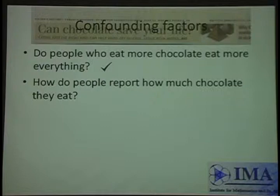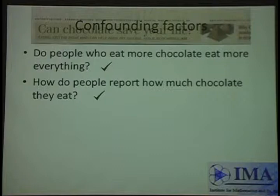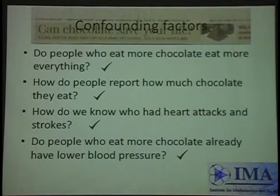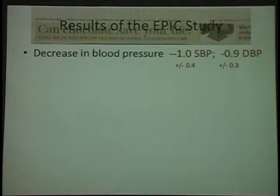Maybe the people who eat more chocolate already have lower blood pressure to start with — we can't control any of these things in a large study. They were able to compensate using statistics. The results? Not quite so dramatic. The decrease in blood pressure was one unit — statistically significant because it was a huge study, but nobody gets excited if their blood pressure goes down by one. Ten, okay maybe. Twenty, great. But one doesn't really count.